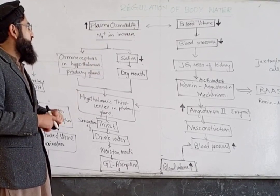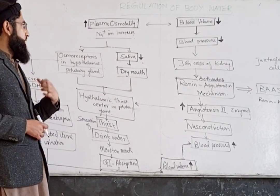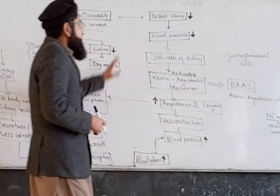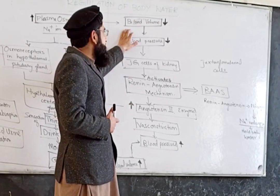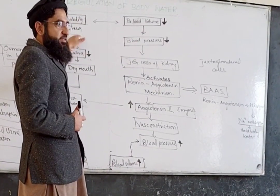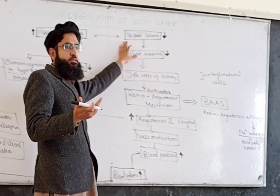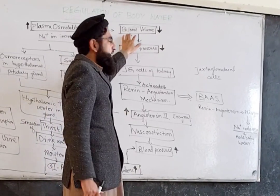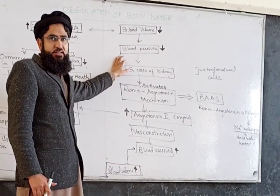When blood volume in water is held, plasma osmolality will be decreased. If blood volume is decreased — it may be due to changes in plasma osmolality or other reasons like vomiting or cardiac pressure — when blood volume is decreased, our blood pressure will also be decreased.